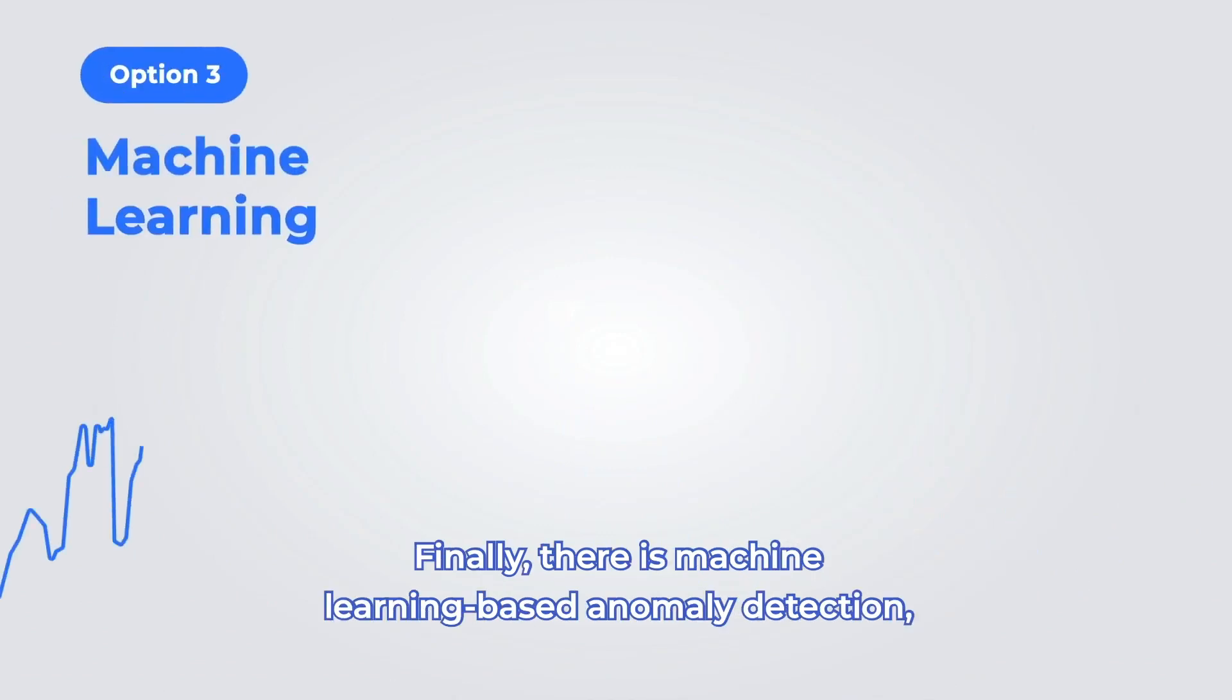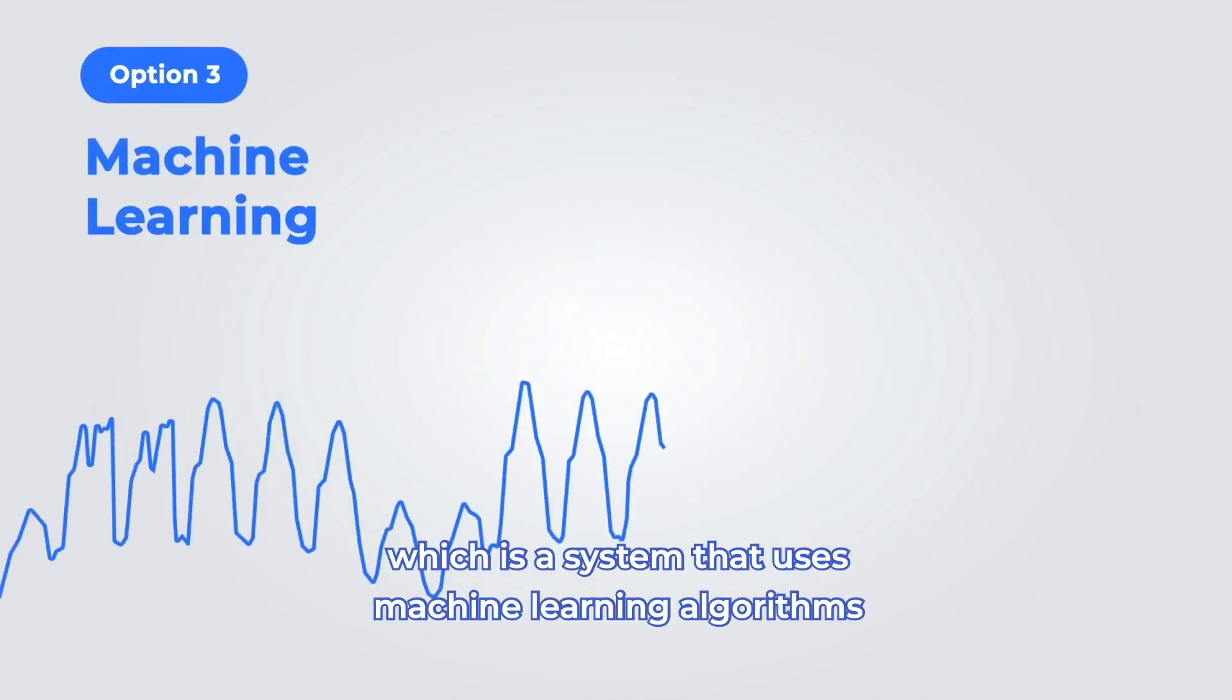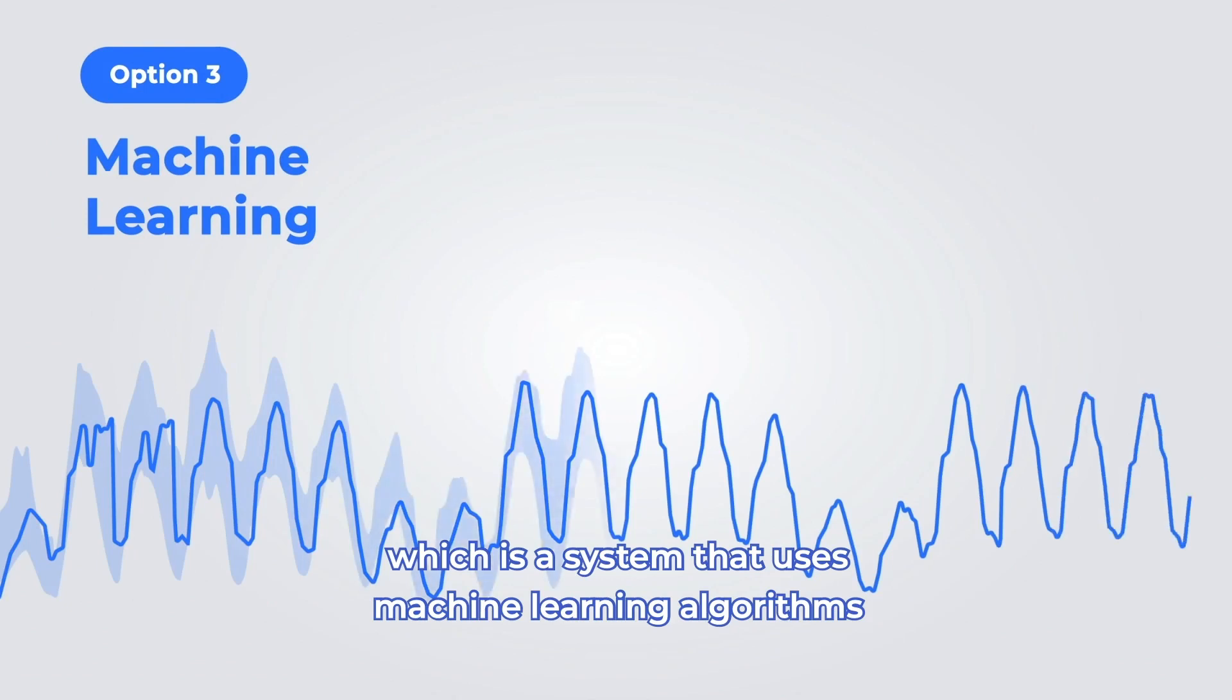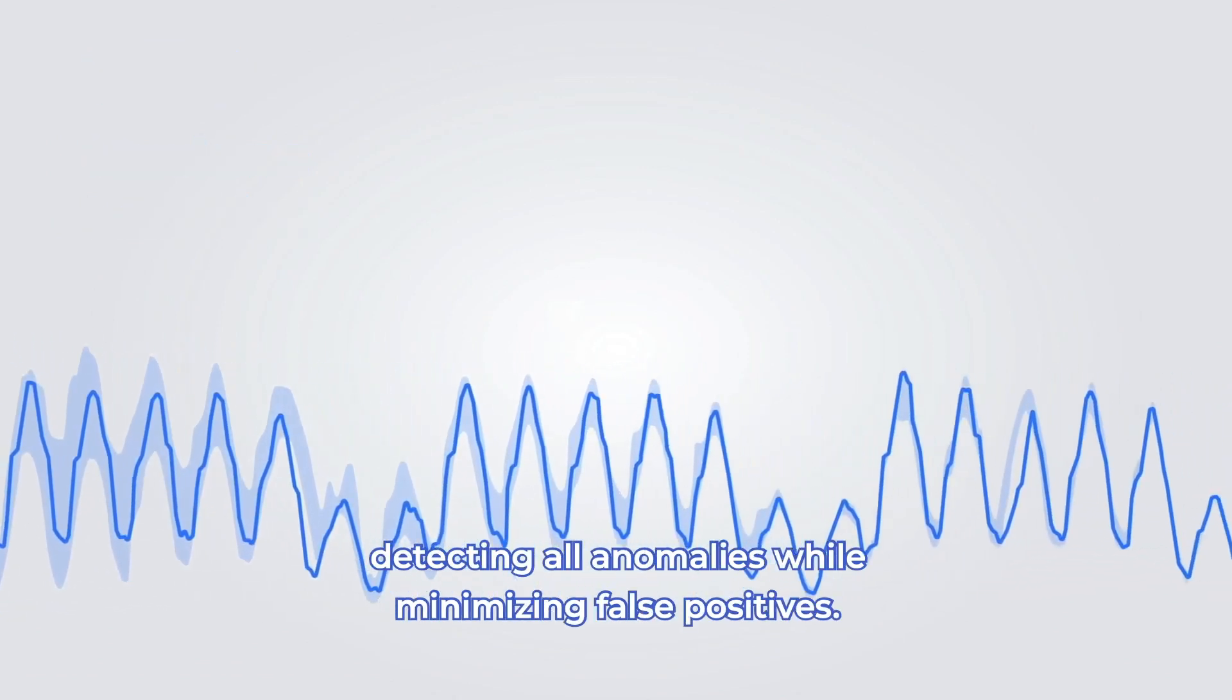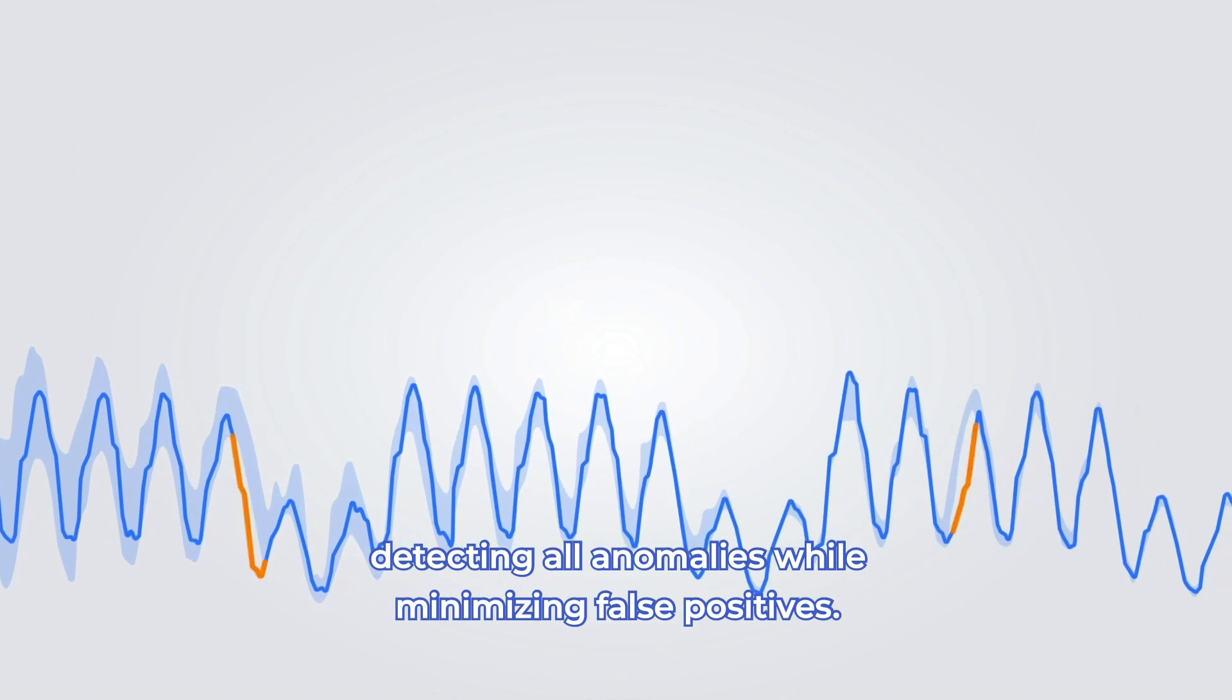Finally, there is machine learning based anomaly detection, which is a system that uses machine learning algorithms to learn the normal patterns in the data accurately, detecting all anomalies while minimizing false positives.